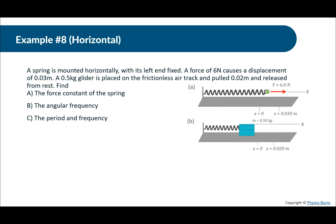Example number eight. A spring is mounted horizontally with its left end fixed. A force of six Newton is causing displacement of 0.03 meters. A 0.5 kilogram glider is placed on the frictionless air track, and pulled 0.02 meters and released from rest. So we're using the same spring here. A, what is the force constant of the spring? So we're looking for the spring constant here. We should know that the force of the spring is equal to Kx. That's Hooke's law. So we know the force of the spring. We're stretching it six Newtons. And we don't know what the spring constant is. That's what we're looking for. But we do know that when we use six Newtons of force, it stretches 0.03 meters. 6 divided by 0.03. We get 200 Newtons per meter.